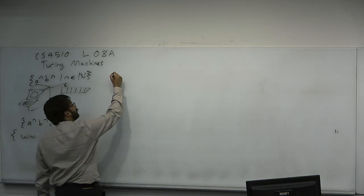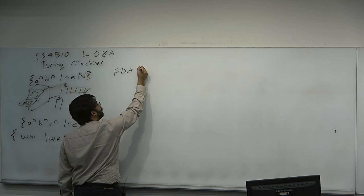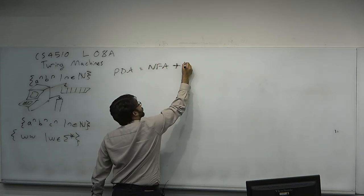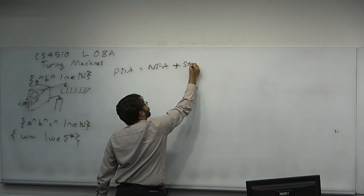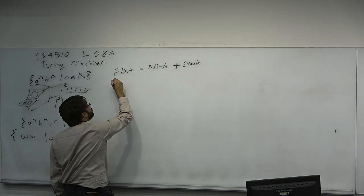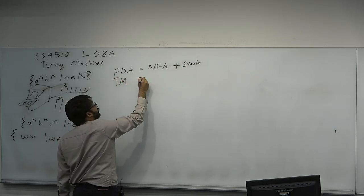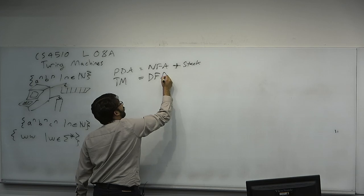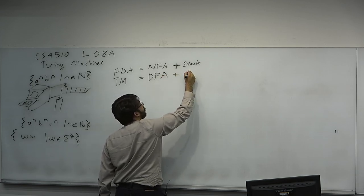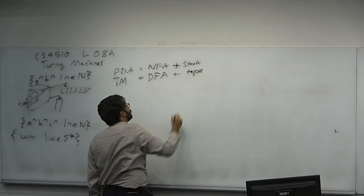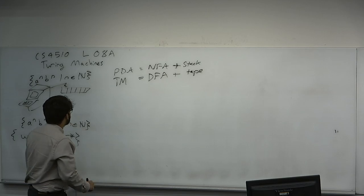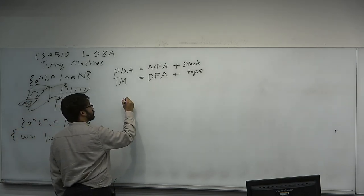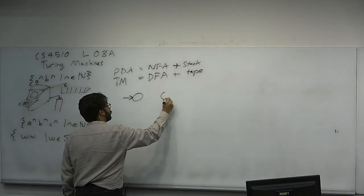If a PDA is simply an NFA with a stack, a Turing machine — named after Alan Turing — is simply a DFA given a tape, or an array. We'll call it a tape. Let me show you what a Turing machine looks like, since we showed what a PDA looks like.